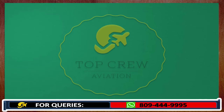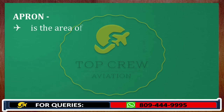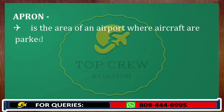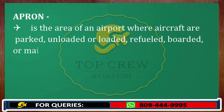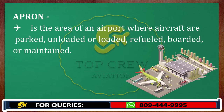What is apron? Apron is the area of an airport where aircraft are parked, unloaded or loaded, refueled, boarded or maintained. So it is just like our car parking.